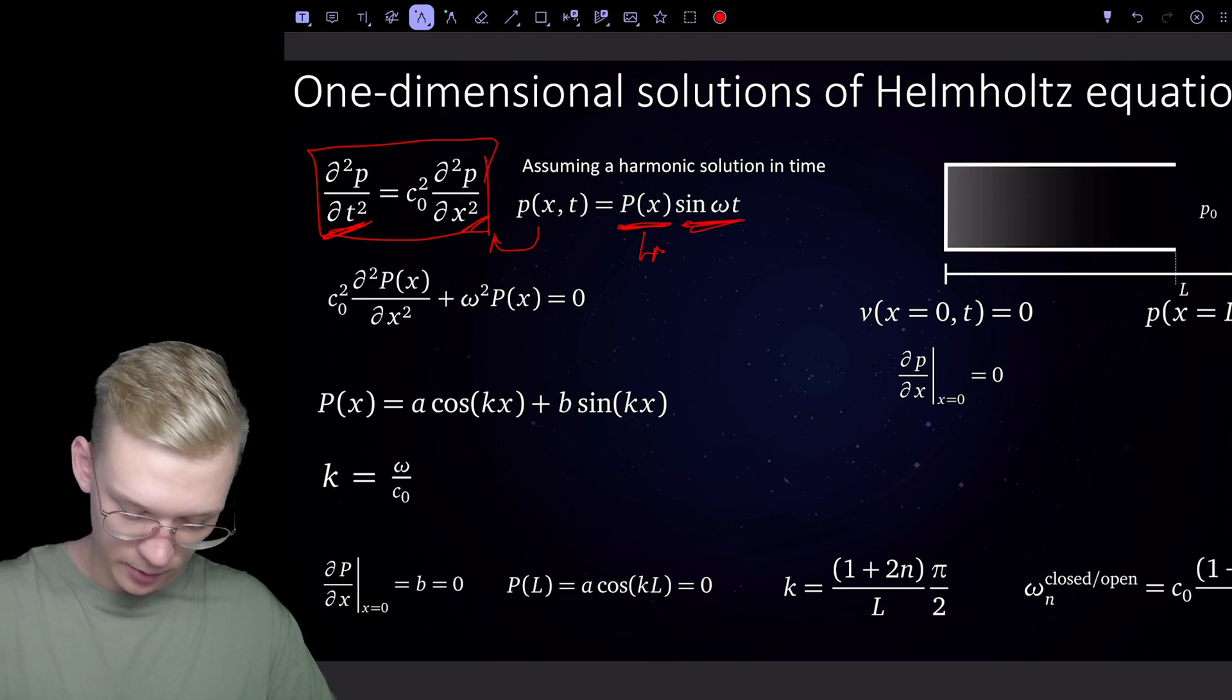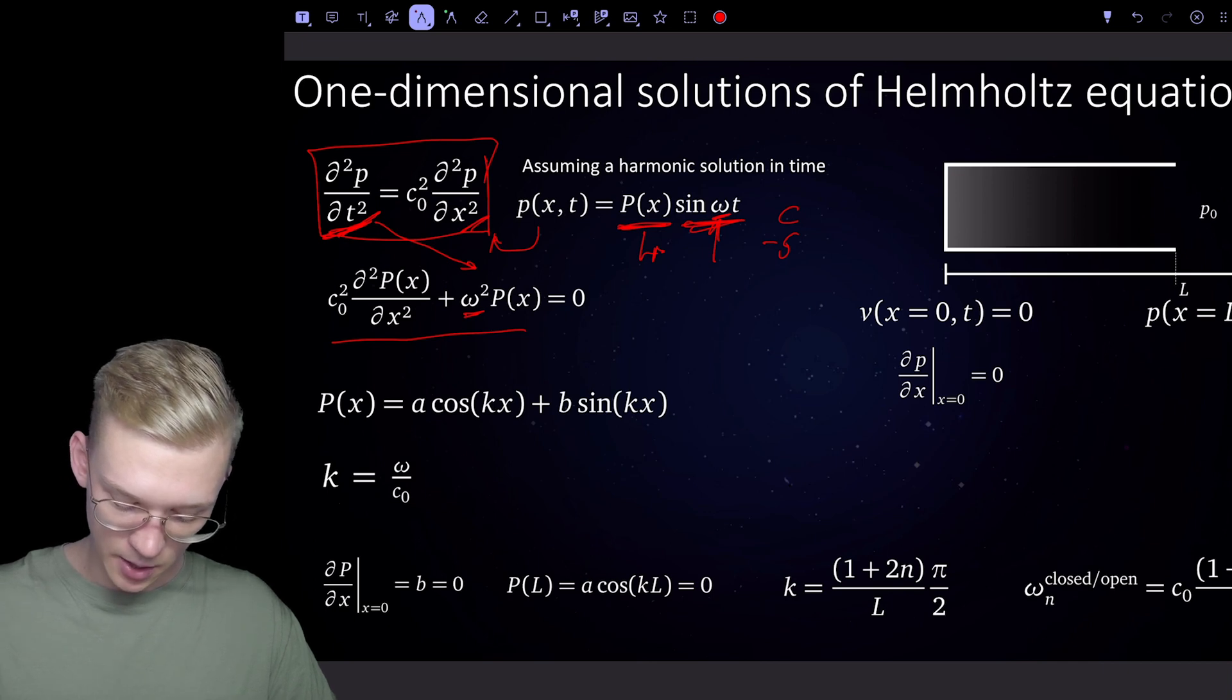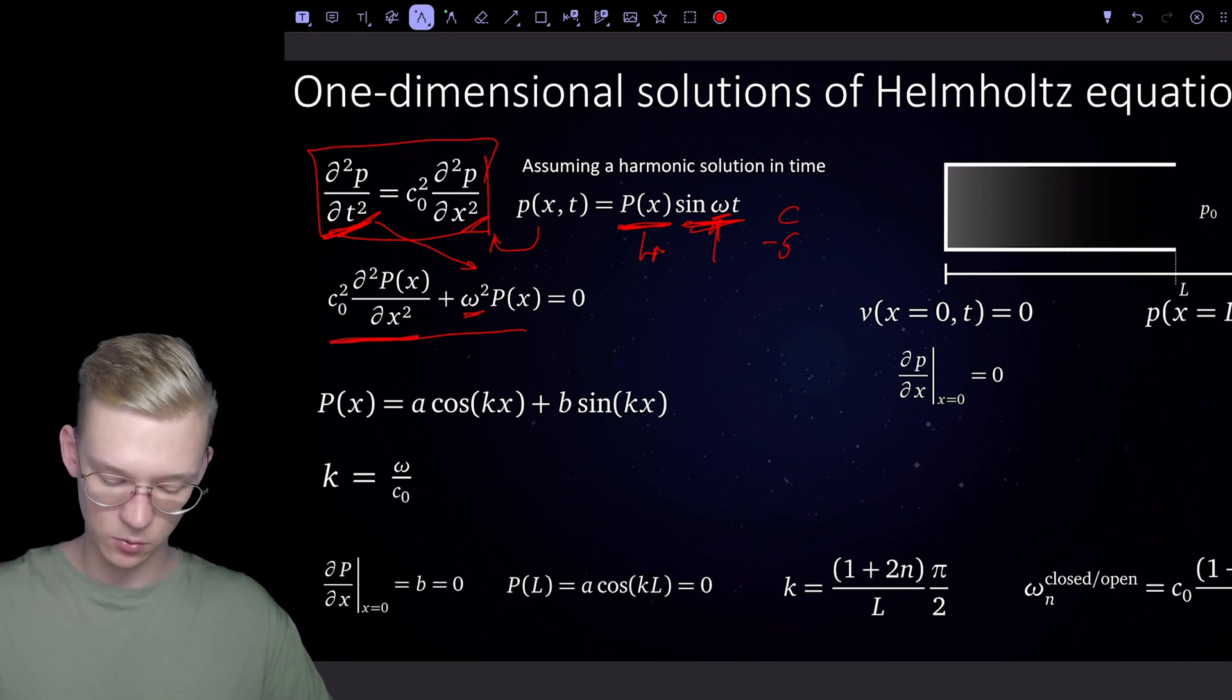Derive the pressure twice with time, you get omega squared, because we have omega coming from here. We switched from sine to cosine, from cosine to minus sine, that's why we put them both on the left hand side, and then we can derive our pressure function twice with x.